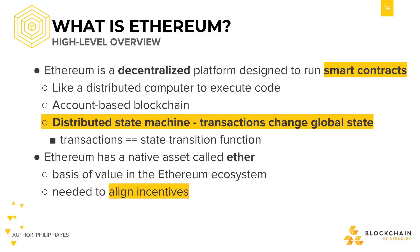It uses a blockchain, and its blockchain is account-based instead of UTXO-based, like in Bitcoin. Formally, Ethereum is implemented as a distributed state machine, and transactions on the network change the global state of the system. Nodes in Ethereum keep track of and come to consensus on the global state of the system, which includes data about who owns what. Execution of transactions bring us from a previous state to a new state, so they're the state transition functions.